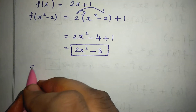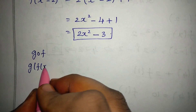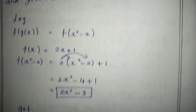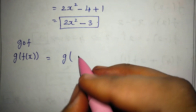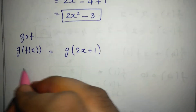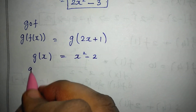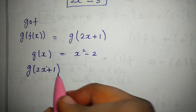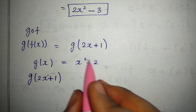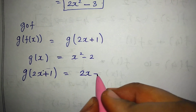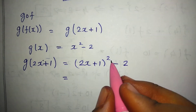Next, g of f. Now we substitute f of x into g of x. Since g of x is equal to x square minus 2, we replace x with f of x, which is 2x plus 1. So g of f of x is equal to 2x plus 1, the whole square, minus 2.